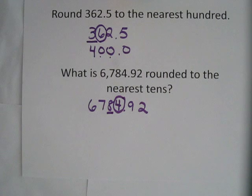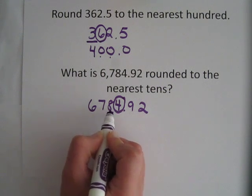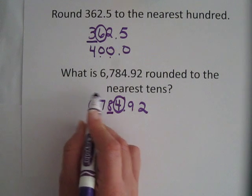The 4 is going to tell me that I'm going to leave it alone. I'm not going to do anything with it because it's a 0 to 4. So therefore, this 8 stays the same. So all the numbers over here I rewrite.